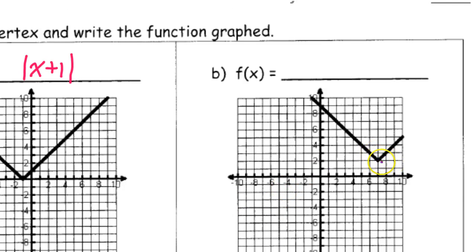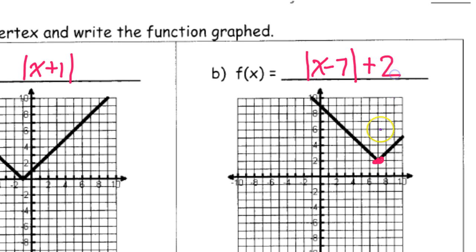Part B — let's start with the vertex. It is right 7 and up 2. For the right 7, that would be x minus 7, because it's the opposite of what you'd think — minus 7 actually sends you to the right by 7. Then up 2, that's just a plus 2 on the end. The slope seems to just go up 1 right 1, so 1 over 1, and I don't need to write anything in front. So that's the answer.